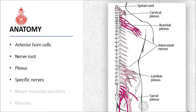In this lecture, due to time limits, I would like to limit my talk to anterior horn cells, nerve roots, plexus, and specific nerves. The neuromuscular junction and muscles will be a separate lecture, so I will confine my discussion to these four categories of the peripheral nervous system.